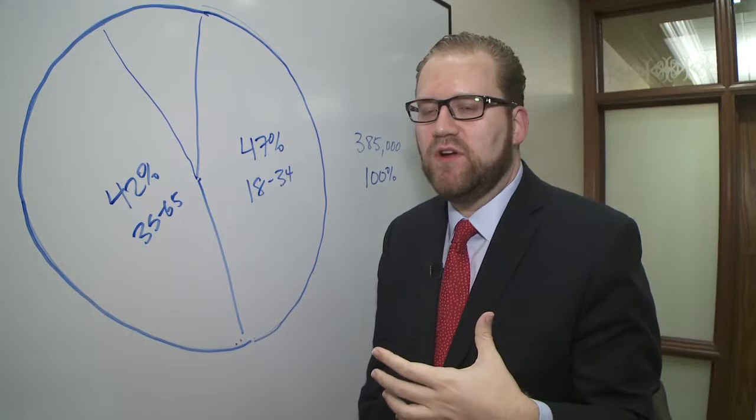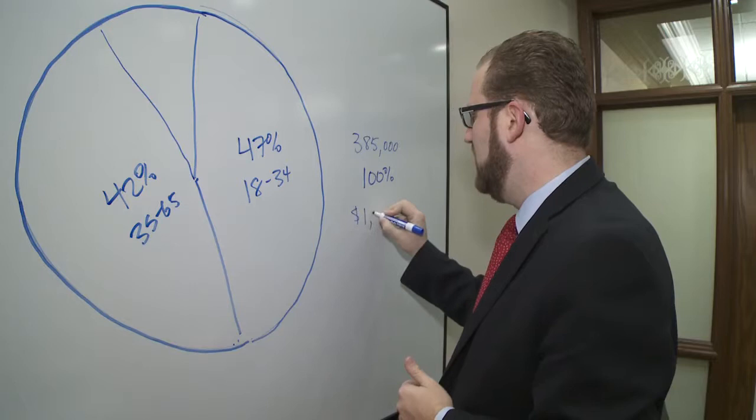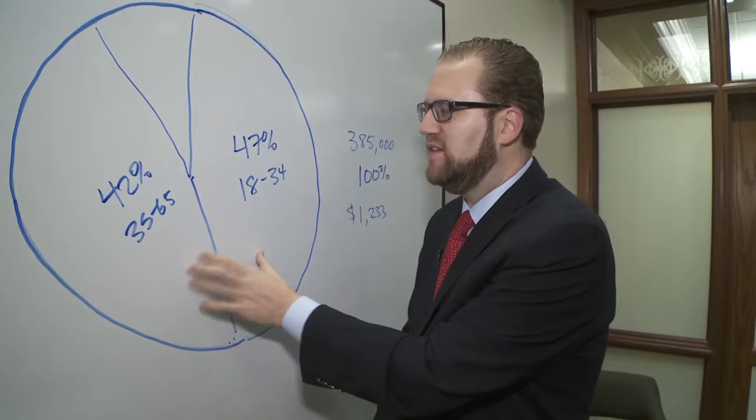So these two big groups of people cost the rest of us money because when they need health care coverage, they predominantly have to access the emergency room. A National Institute of Health study showed us that the average cost of an emergency room visit is over $1,200. As these folks access health care, it's very expensive.